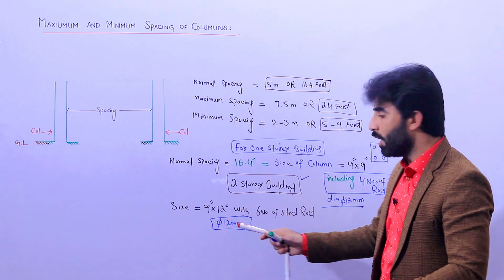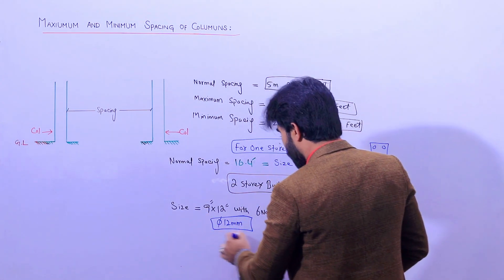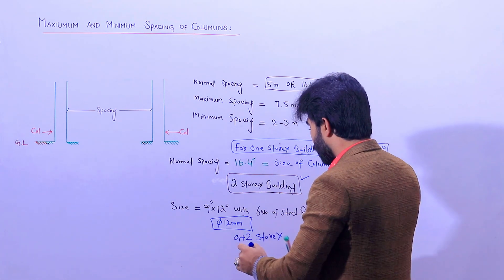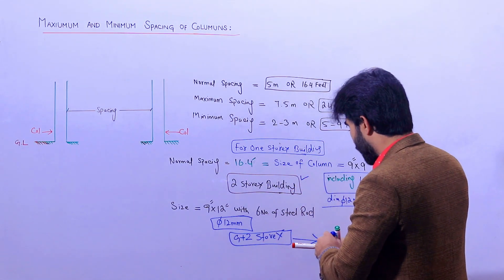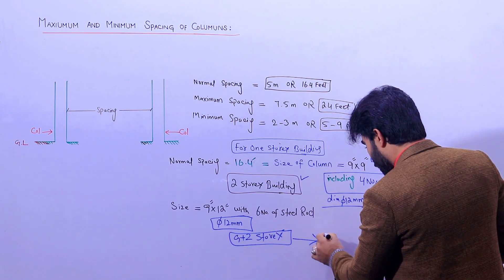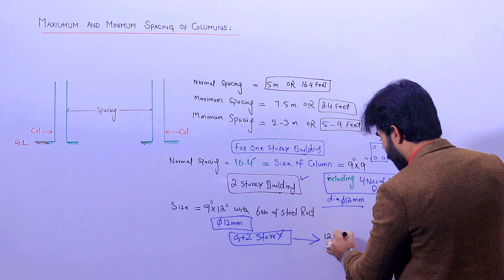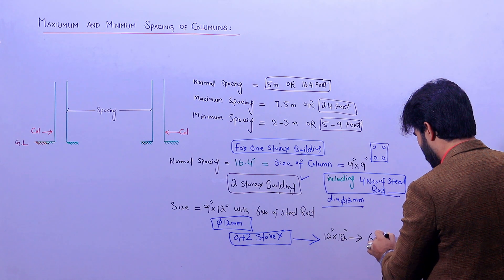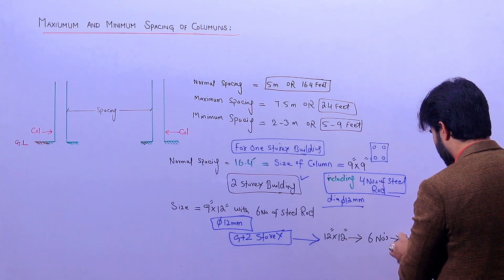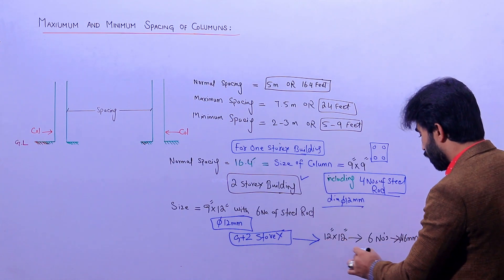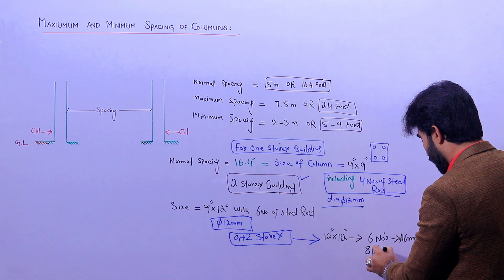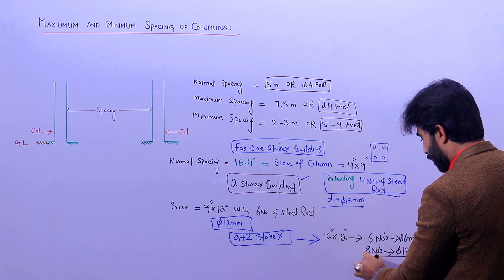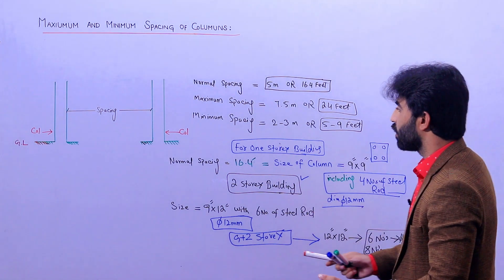If you are going for G plus two — meaning a three-story building — the size you can keep is 12 by 12 inches including six numbers of steel rods with a diameter of 16 millimeters. Alternatively, if you are using eight numbers of steel rods, you can keep the diameter at 12 millimeters. This is also very important for normal residential buildings.